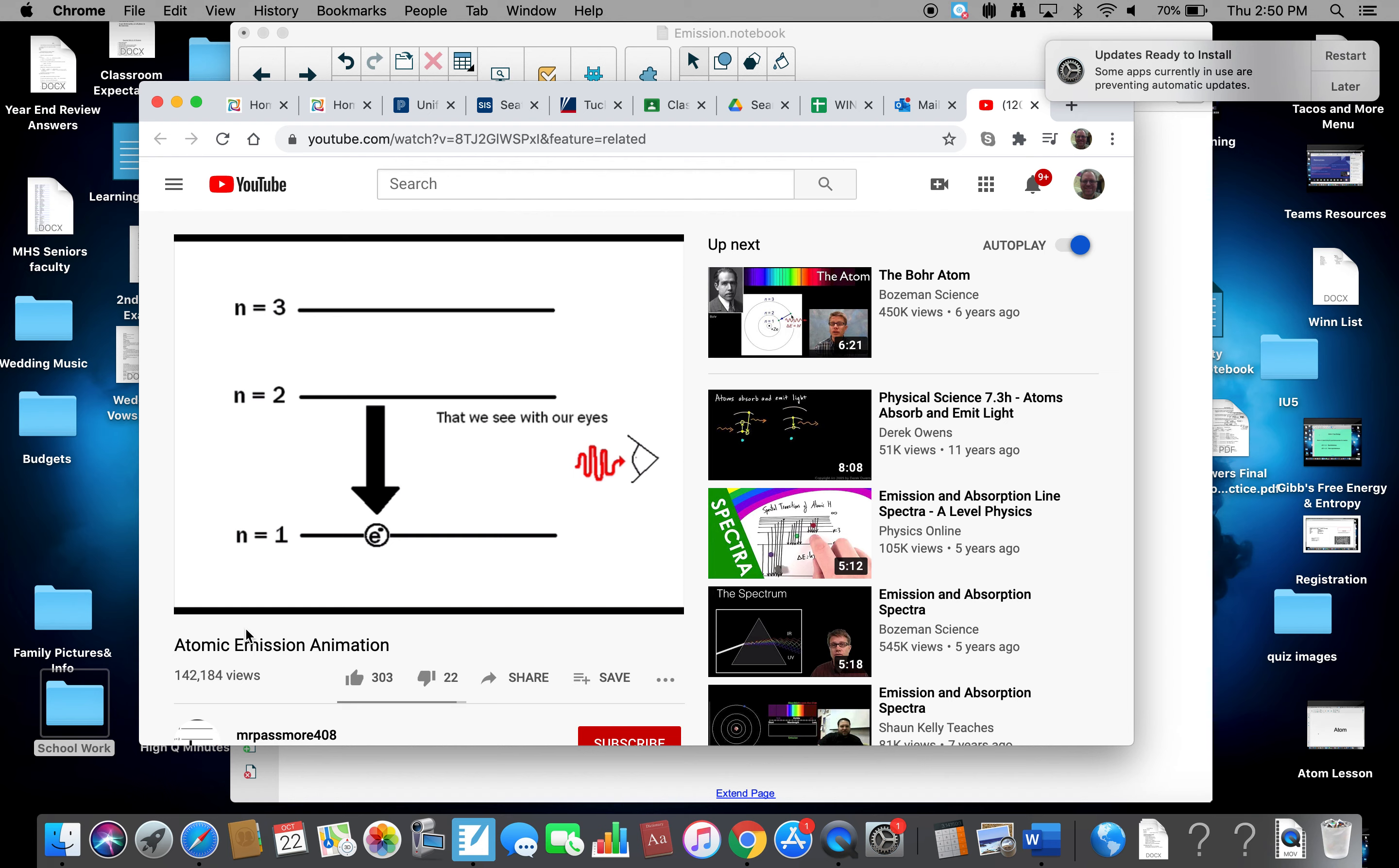Now, we're going to try this again, but this time with a little bit more energy. So we're going to do this with more energy. So this time, instead of a red light, we're going to do a violet light, the other end of our visible spectrum. So here it comes.